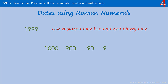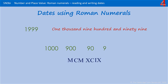1000 is M. 900 — if 900 is 100 less than 1000, we put the 100 before the 1000. 90 is 10 less than 100, so we put 10 before the 100. And 9 is 1 less than 10, so we put the 1 in front of the 10. And now you have the year 1999 in Roman numerals.